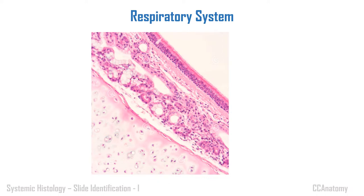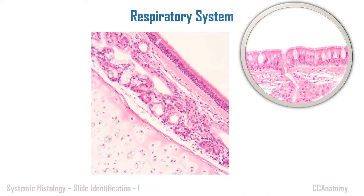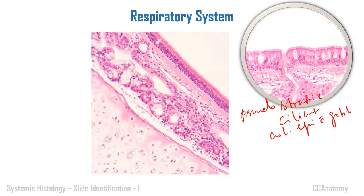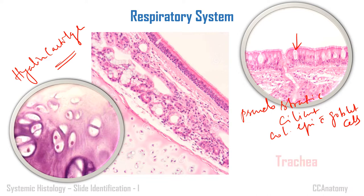In the respiratory system there are only two slides. If you've seen the first two videos, you can clearly identify the epithelium. This is the pseudo-stratified ciliated columnar epithelium with goblet cells. You can make out the goblet cells, and one more thing you can see is the hyaline cartilage. The only slide which has both these features — pseudo-stratified ciliated columnar epithelium with hyaline cartilage — is the trachea.